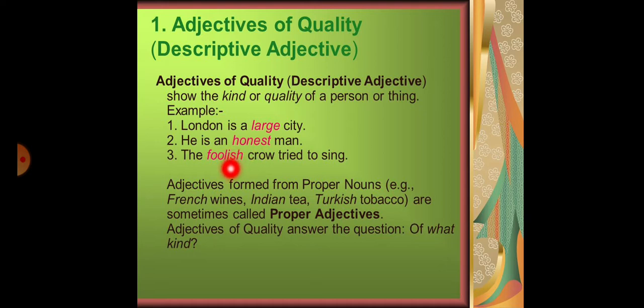Ab yahan pe main aapko kehti chalongi ke adjectives formed from proper nouns are looking like these: like French wines, Indian tea, Turkish tobacco. Tobacco is a noun, tea is a noun, and wines are noun. So by adding these three adjectives with them we will make proper adjectives. Theek hai, so yeh ek aur term humne yahan pe discuss kar li ke proper adjectives kisko bolte hain. Isko ab zehan mein rakhiyega.